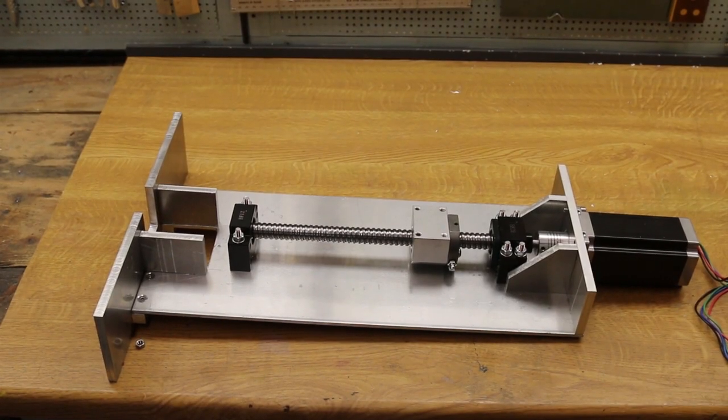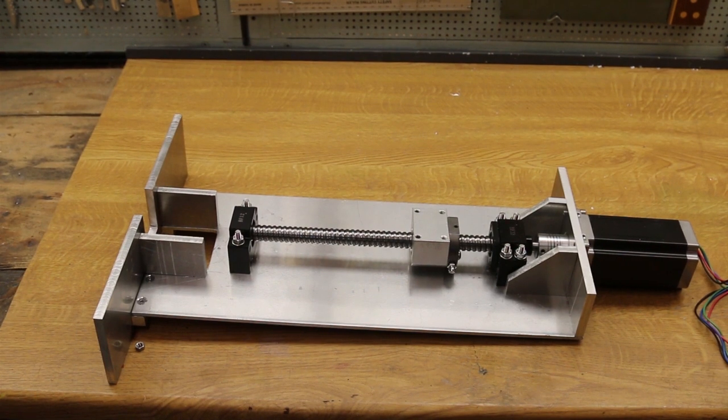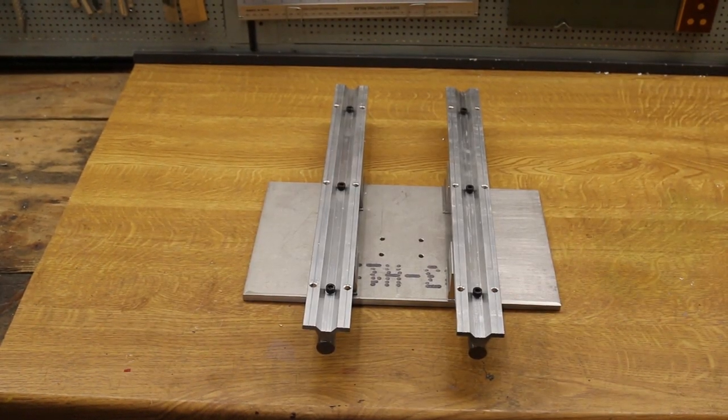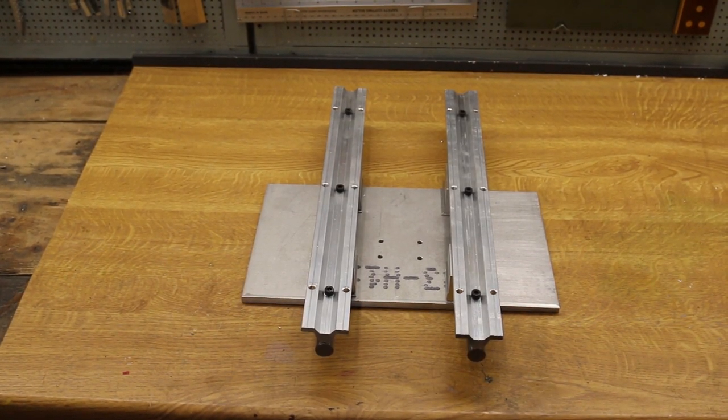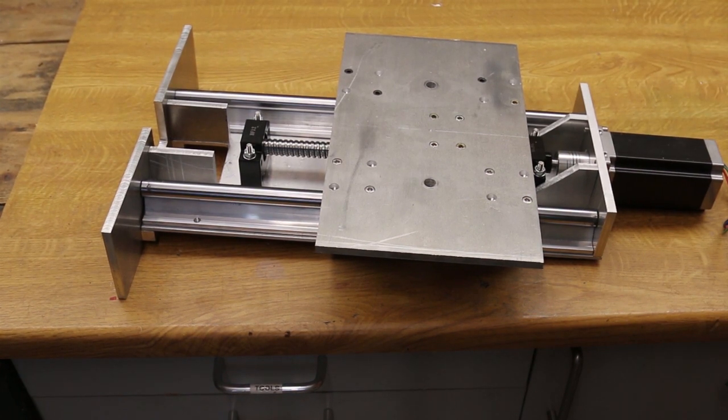With the stepper motor and ball screw in position and torqued down, and the two rails fitted onto the bottom plate, bringing the two together means the mounting holes for the rails can be accurately aligned.